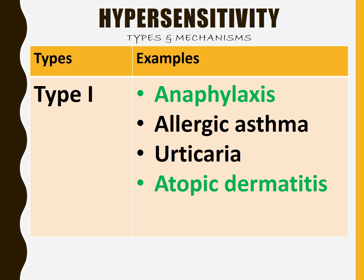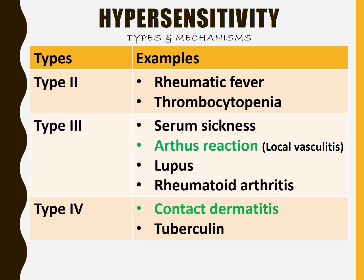Allergic asthma and urticaria are also examples of type 1 hypersensitivity. Rheumatic fever and thrombocytopenia are examples of type 2 hypersensitivity. Arthus reaction is an example of type 3 hypersensitivity. Along with this, serum sickness, lupus, and rheumatoid arthritis are also examples of type 3. Contact dermatitis and tuberculin reaction are delayed reactions — examples of type 4.